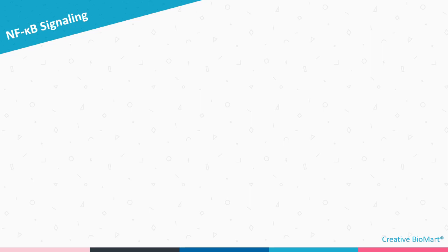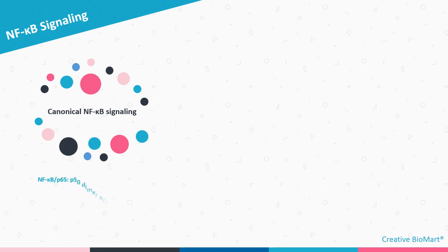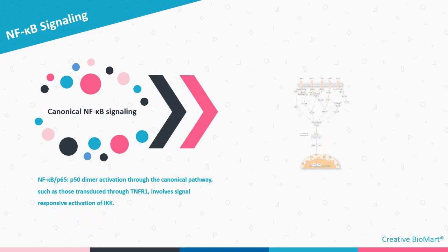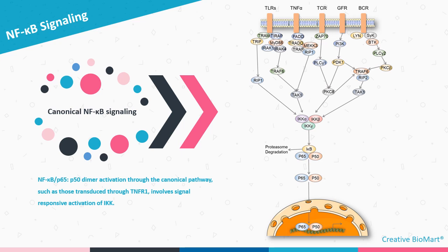Next, NF-Kappa-B signaling. First, canonical NF-Kappa-B signaling. Protein 65 and protein 50 dimer activation through the canonical pathway, such as those transduced through TNFR1, involves signal-responsive activation of IKK. In response to inflammatory stimuli, the IKK complex phosphorylates I-Kappa-B at specific N-terminal serine residues. Subsequent ubiquitination of canonical I-Kappa-B promotes complete proteasomal degradation of the inhibitors to liberate bound NF-Kappa-B dimers. Neither phosphorylation nor ubiquitination alone is sufficient to dissociate I-Kappa-B from the protein 65 and protein 50 dimer; proteasomal degradation of I-Kappa-B is absolutely required for protein 65 and protein 50 nuclear translocation. This mode of NF-Kappa-B activation is protein synthesis independent.